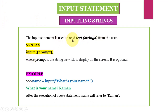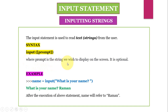We can use the input statement to read text or strings from the user. The syntax is: input(prompt), where prompt is the string displayed on the screen, and this prompt is optional. During execution, the input statement shows the prompt to the user to enter a value from the keyboard, and when the user enters the value, the input statement returns it — which is usually stored in a variable.